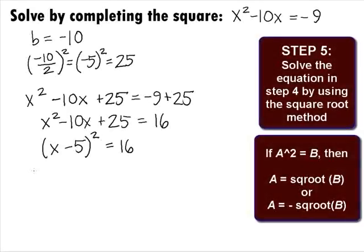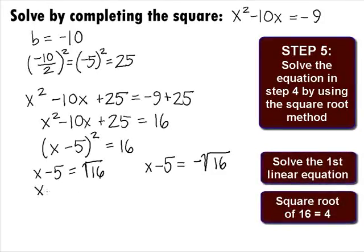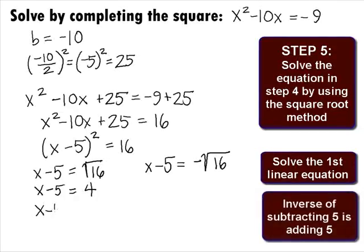In Step 5, we want to solve the equation in Step 4 by using the square root method as we did in Example 6. Applying the square root method, we get the following two equations: x minus 5 equals the square root of 16 or x minus 5 equals the negative square root of 16. In the first equation, we can take the square root of 16 and get x minus 5 equals 4. The inverse of subtract is to add 5 to both sides and get x minus 5 plus 5 equals 4 plus 5, which will lead us to our first solution of x equals 9.